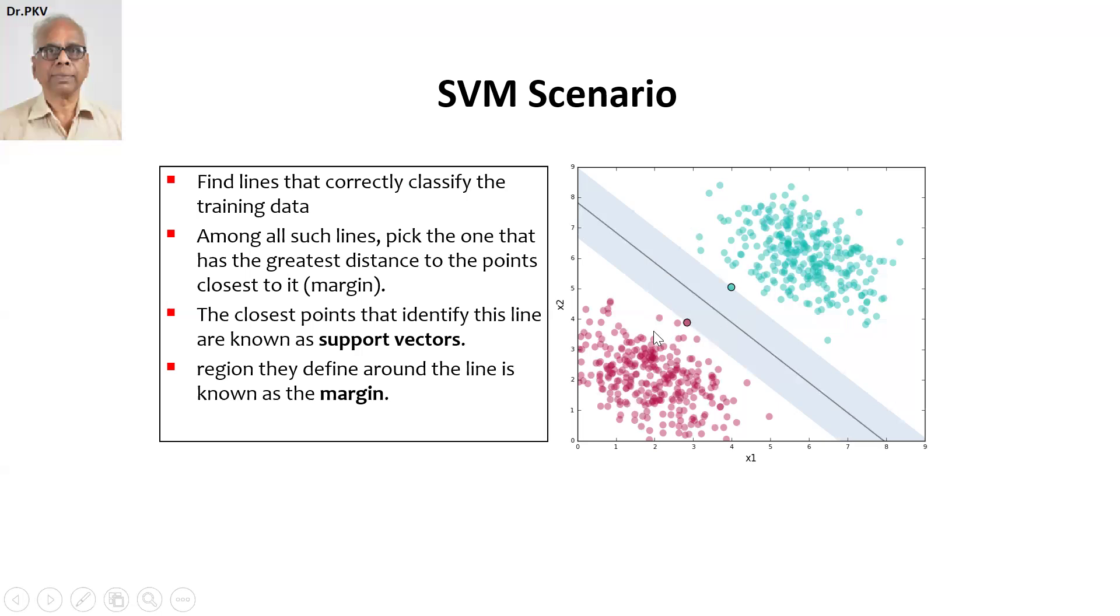And you have to remove points that are either on the boundary or closer to the margin. So the points that are closer, they are called the support vector mission closest to points that identify this line. For example, this is support vector 1 and 2.